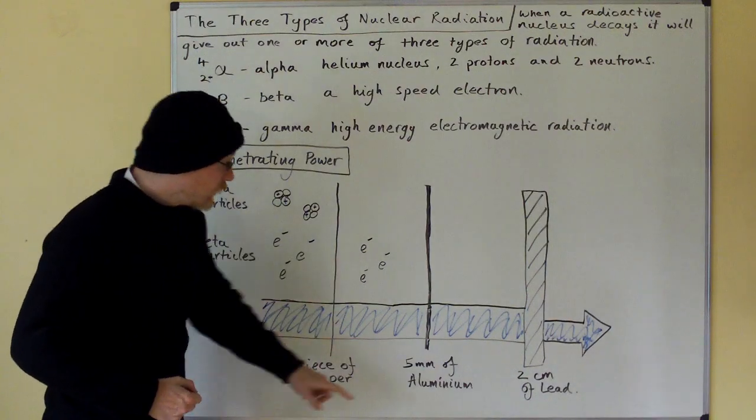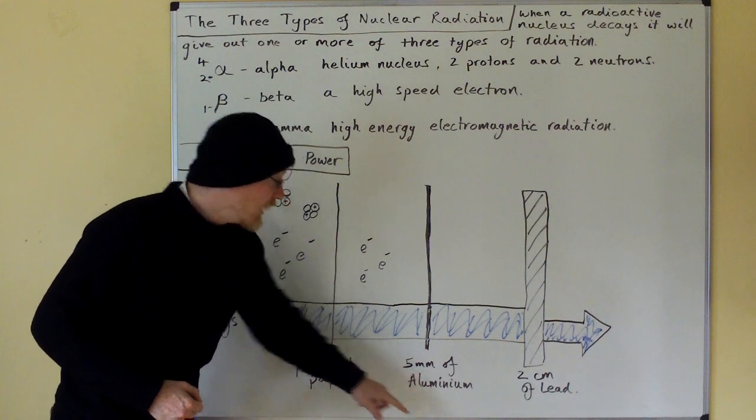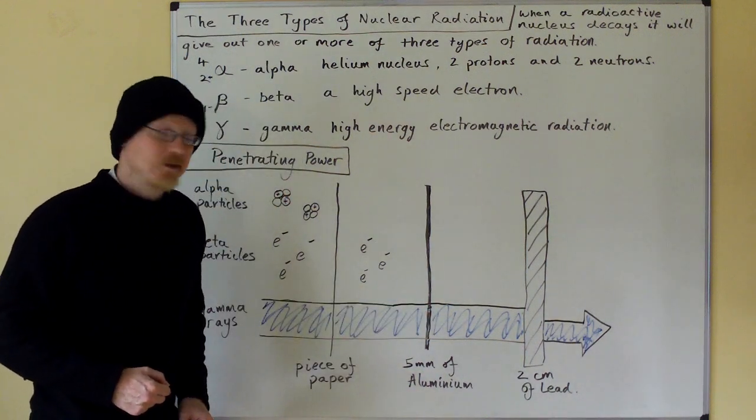Beta particles will be stopped by five millimetres of aluminium. Gamma rays will go straight through the five millimetres of aluminium.